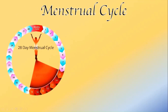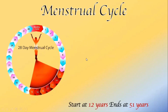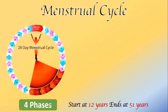The menstrual cycle is generally 28 days, meaning it repeats for a woman every 28 days. Women generally enter into the menstrual cycle at around 12 years of age, which may vary between 8 to 16 years. Women generally end the menstrual cycle at around 51 years, varying from 48 to 58 years. The end of the menstrual cycle is known as menopause.